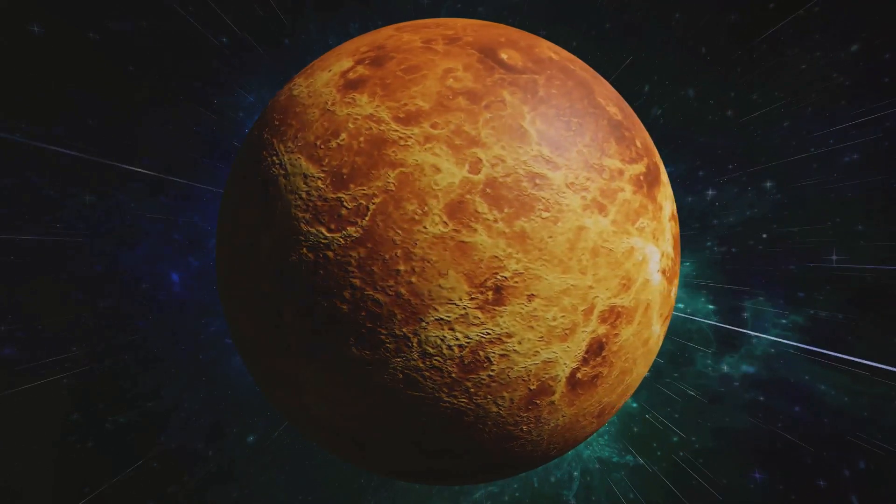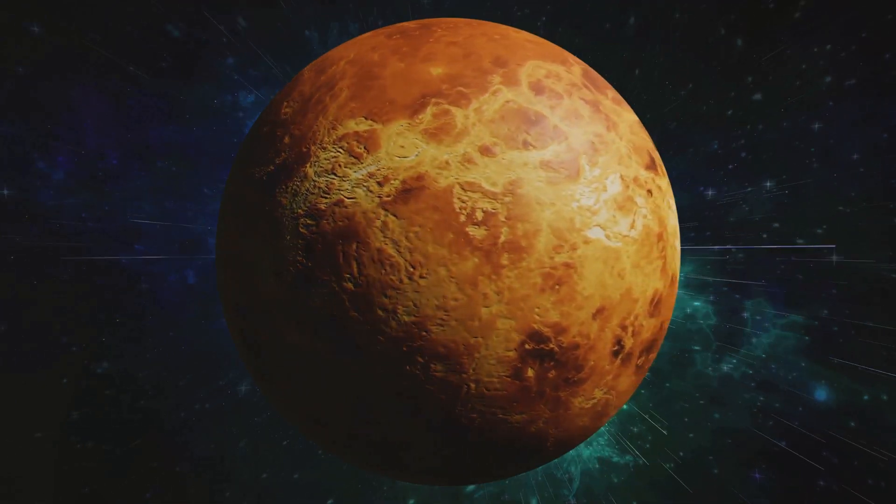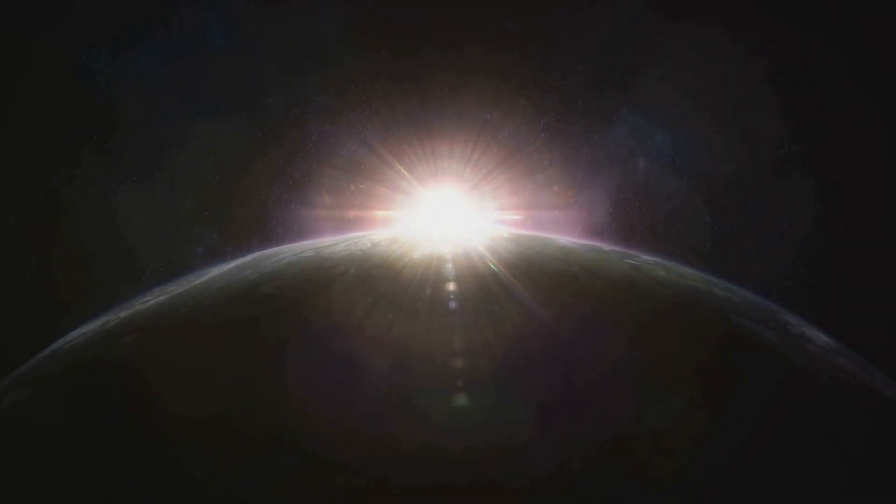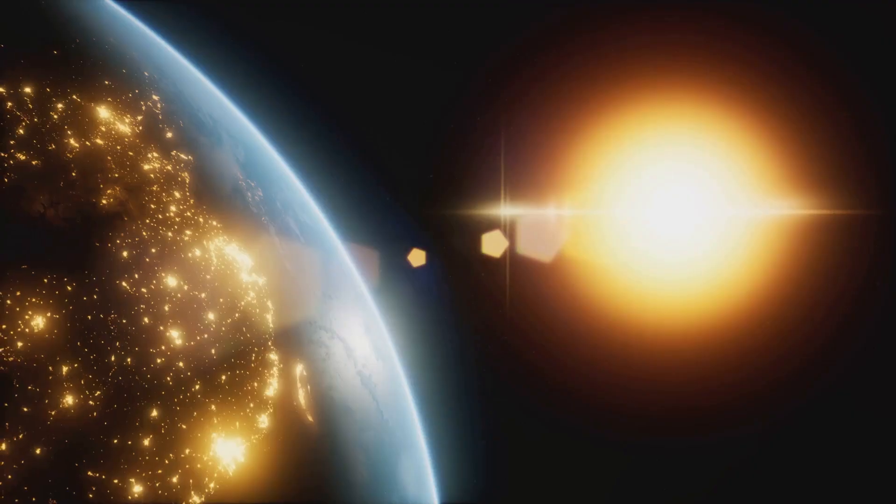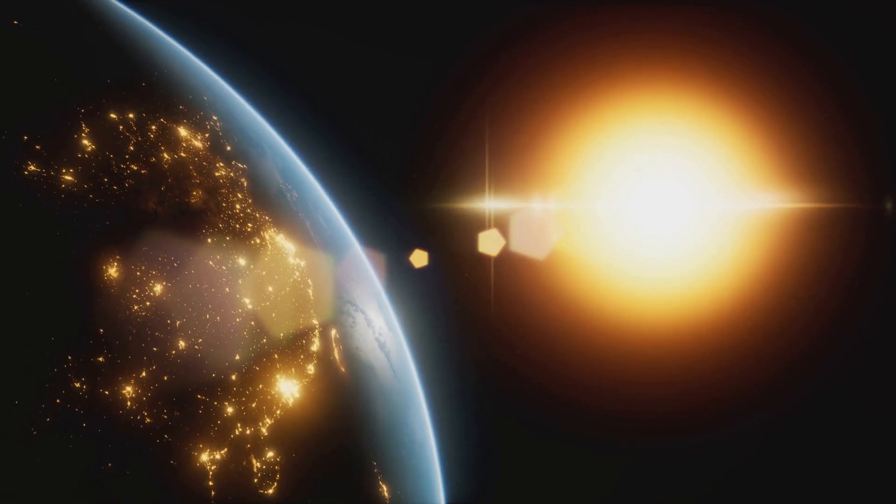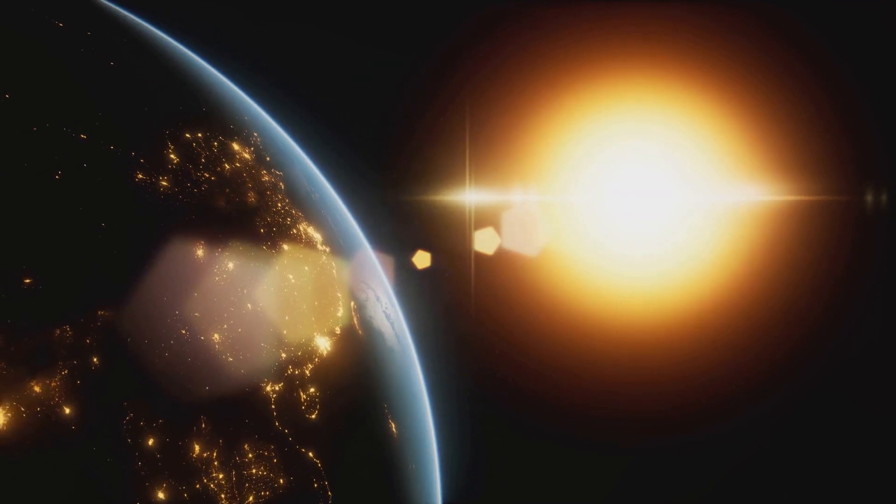Imagine this. If you were standing on Venus, though I wouldn't recommend it due to the extreme heat, you would witness a fascinating spectacle. The Sun would appear to rise in the west and set in the east, contrary to what we're used to here on Earth. This is because of Venus's unique retrograde rotation, and is one of the many reasons why Venus continues to intrigue astronomers and space enthusiasts alike. That's right, on Venus, the Sun rises in the west and sets in the east.